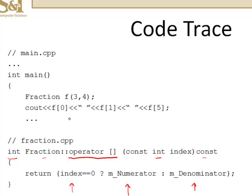So f of 0, that should return what? That should return the numerator or in this case 3. f of 1, well, the argument that we're passing is 1.